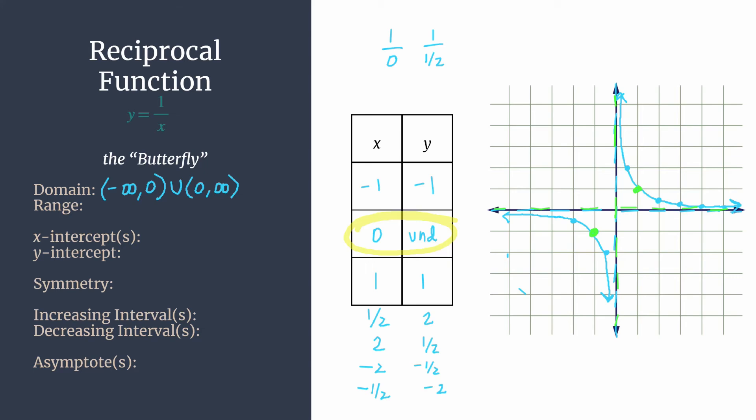We have a similar thing for the range. We want to list all the possible y values looking from bottom to top. The only break is along the x-axis or when y equals zero. Once you've learned how to write that interval notation once, for the range it'll be the same notation, this time referencing the y's. This is the first essential function where we do not have an intercept, no x-intercept, no y-intercept, because we have those asymptotes.